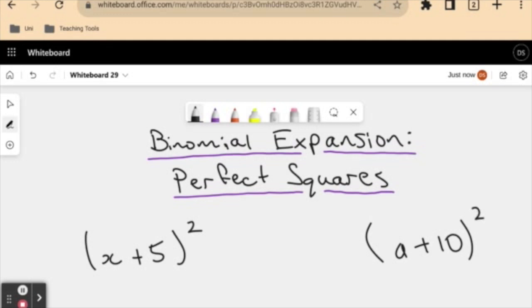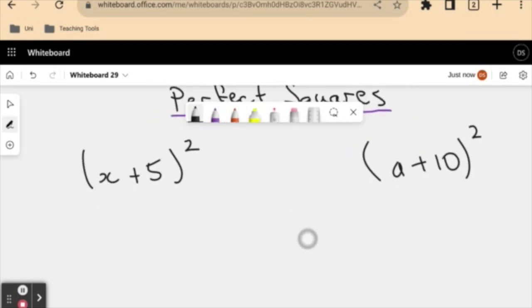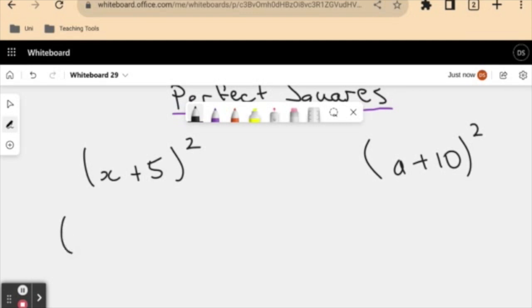So looking at this, from how we defined a square number in a previous video, this is just the same as writing x plus 5 multiplied by itself. And this one here is the same as saying a plus 10 multiplied by itself. That's the definition of a square.